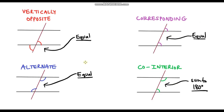Let me finish with a quick summary of these four types of angles. Vertically opposite angles are easy to remember because they're just opposite one another and they are always equal. Corresponding angles are also equal — the easy way to remember this is that they correspond in terms of their position. For example, the top right corner of one quadrant corresponds with the top right corner of the other, the top left with the top left, the bottom left with the bottom left, and the bottom right with the bottom right.